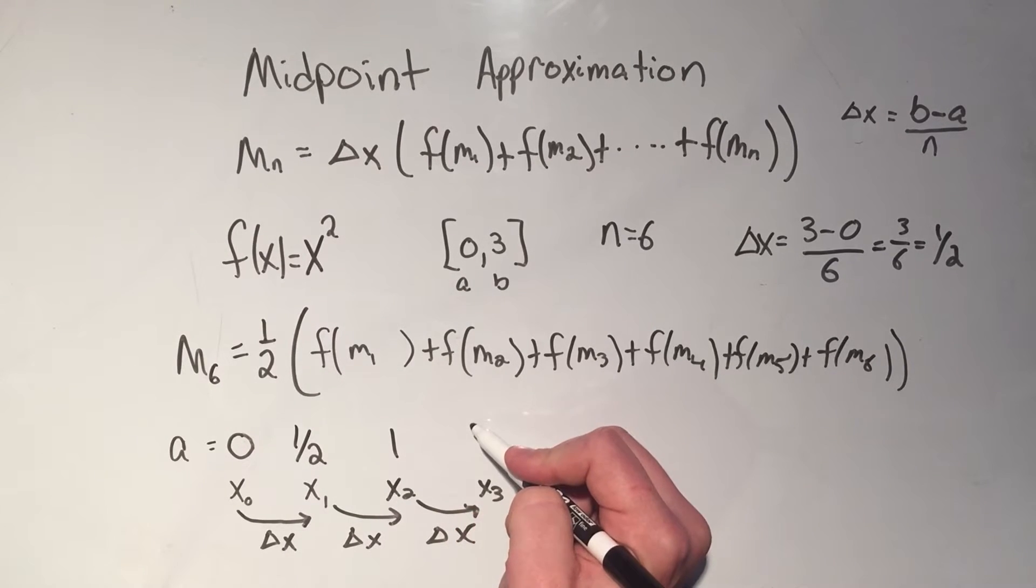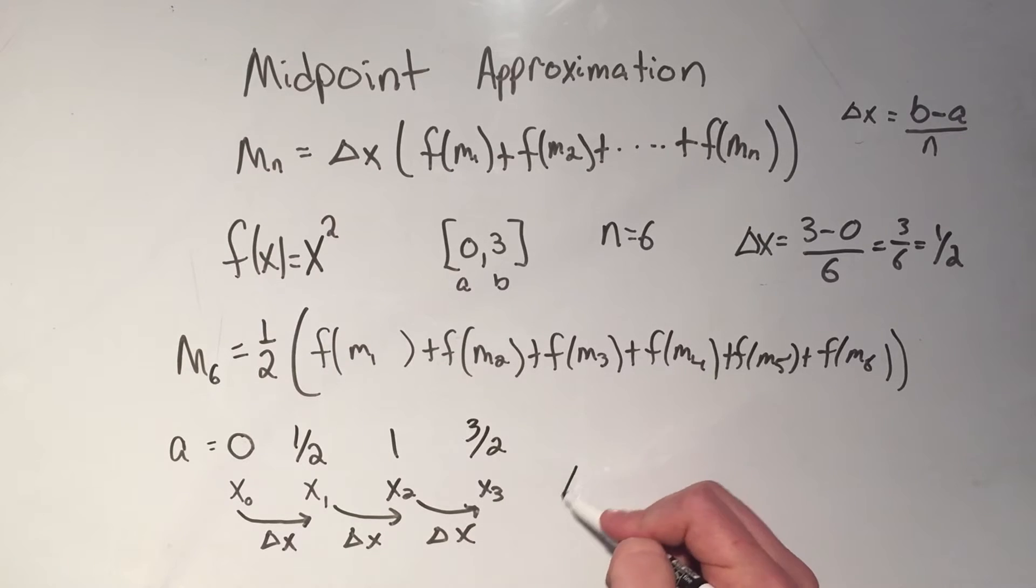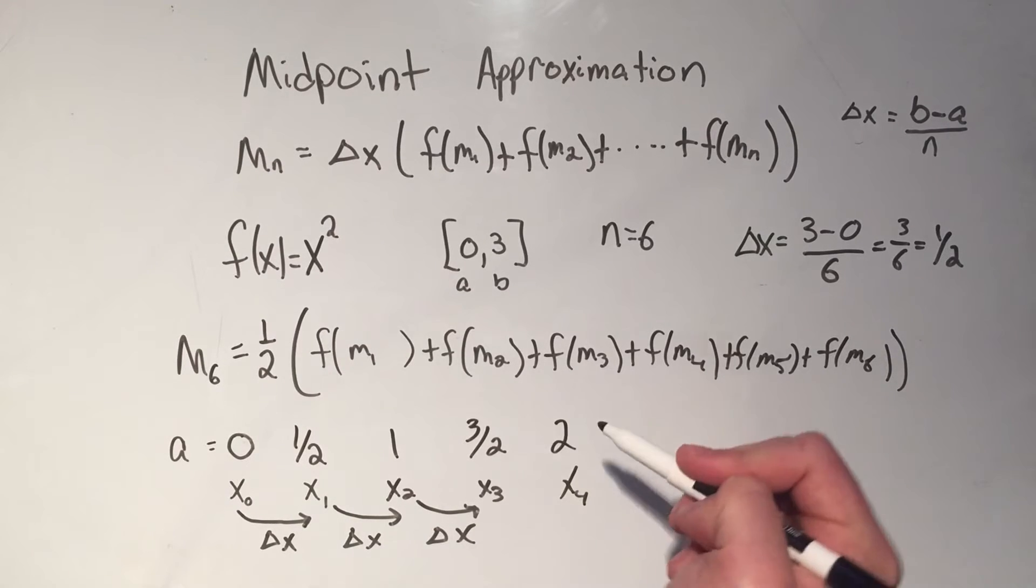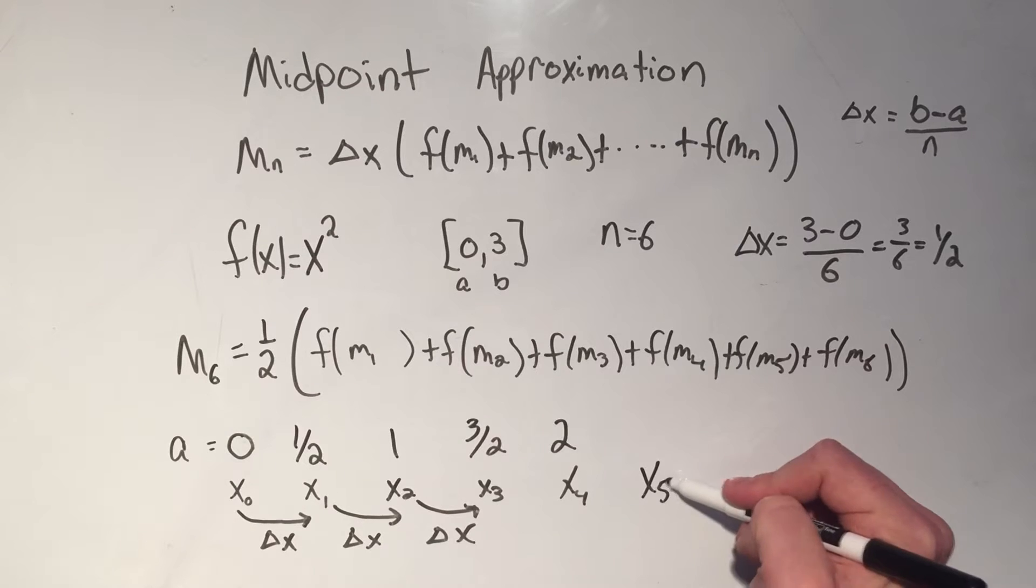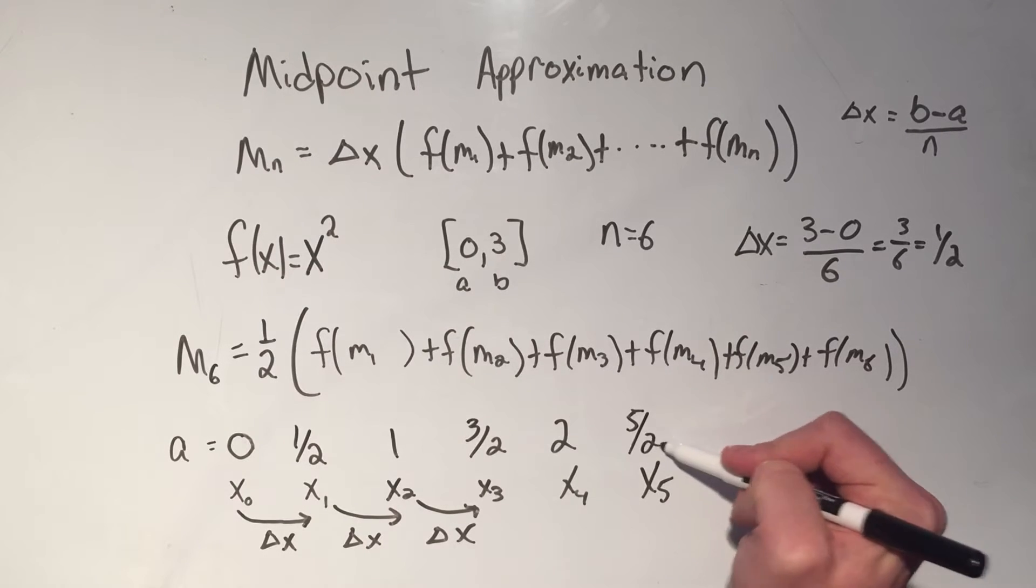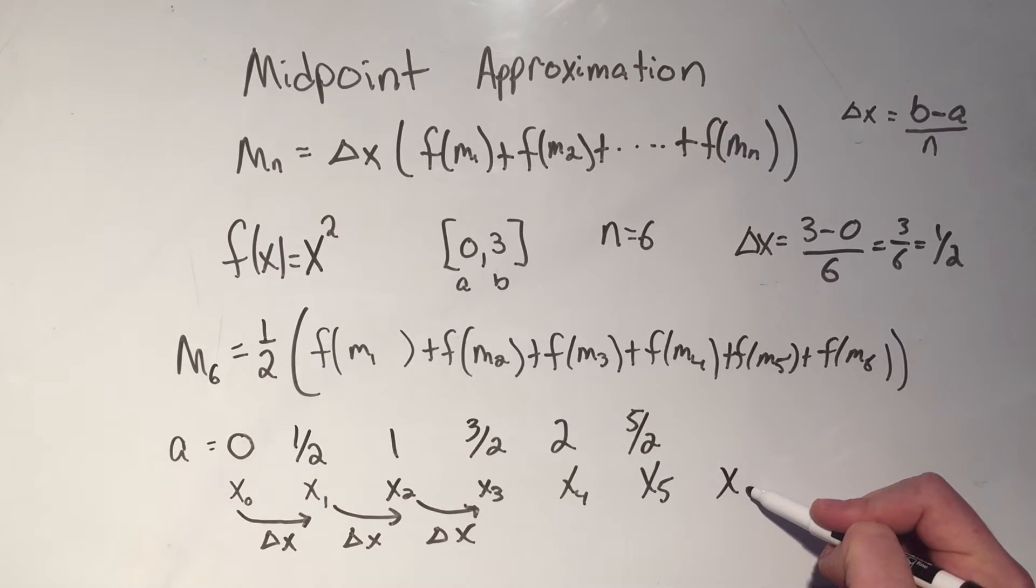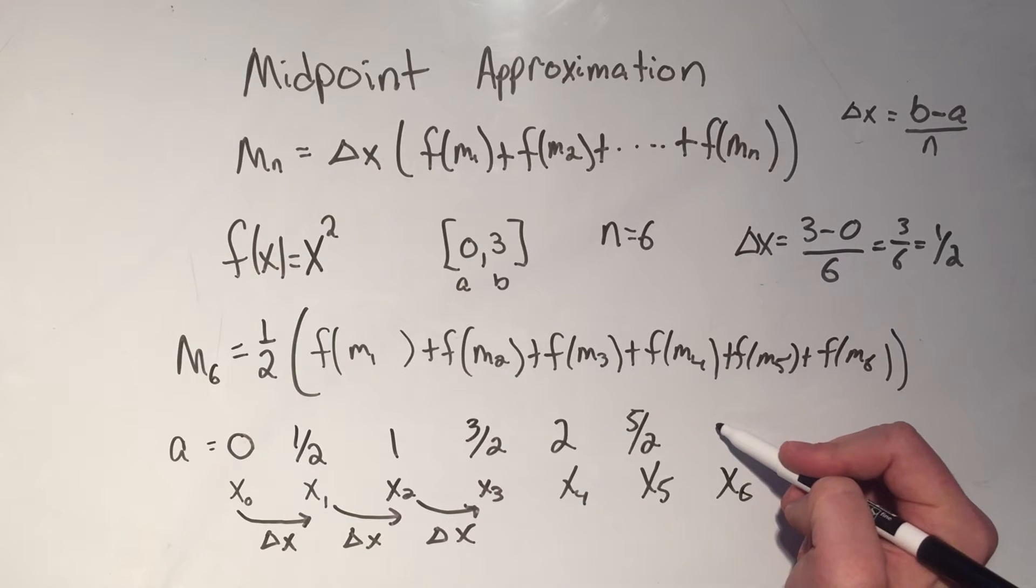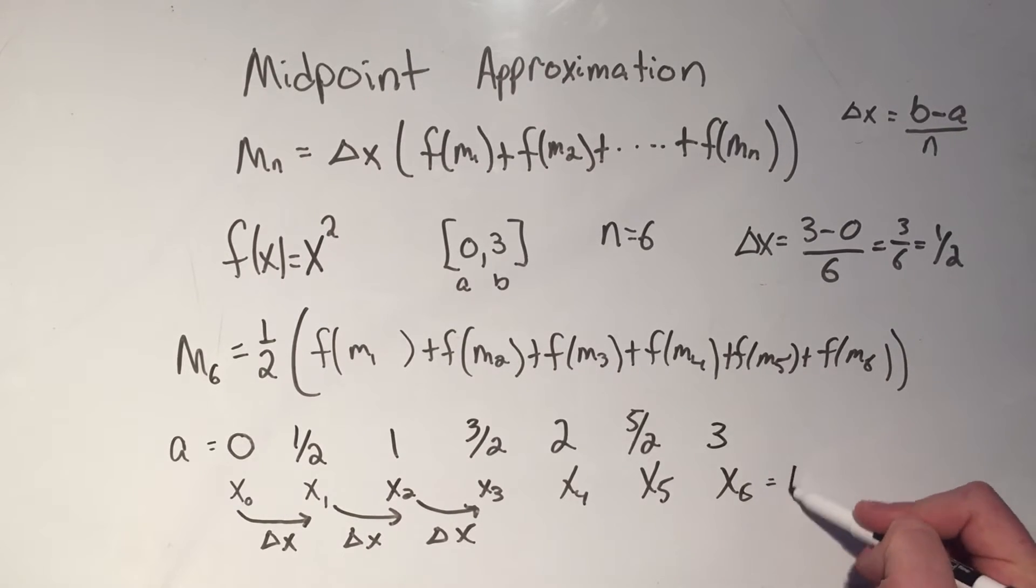1 half plus 1 is 3 halves, x4 would be 2, x5 would be 5 halves, and x6, that's going to be 6 halves or 3, and that's also b.